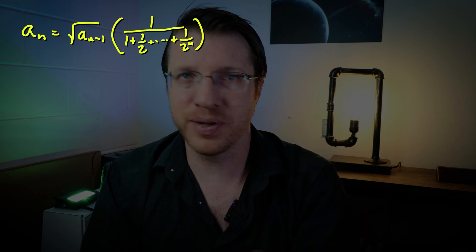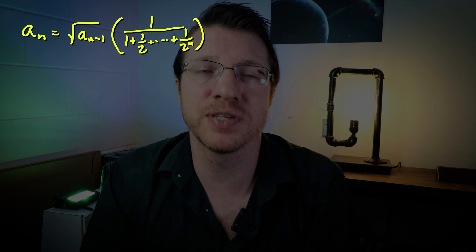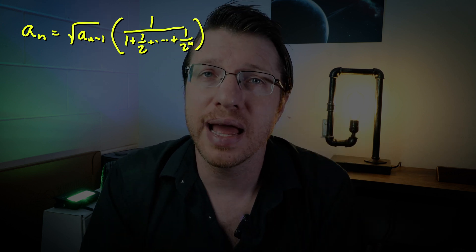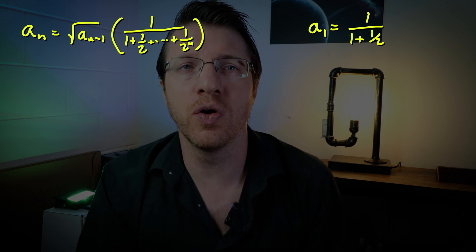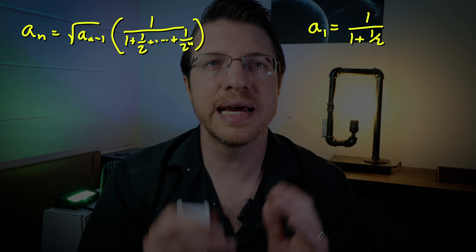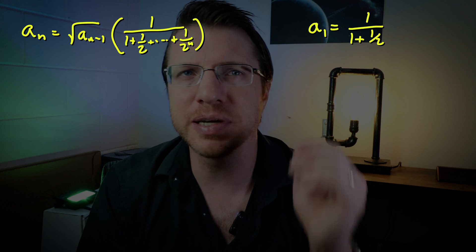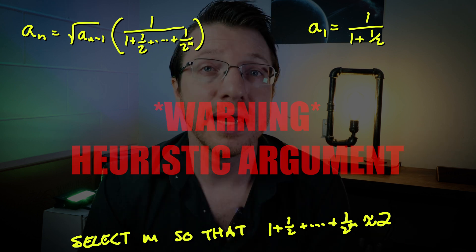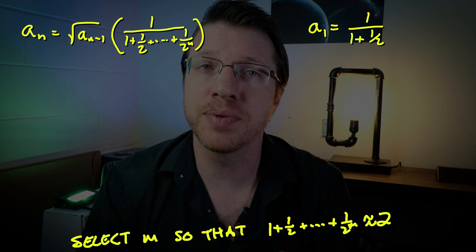We can rewrite this recursively as aₙ is equal to the square root of aₙ₋₁ times 1 over (1 + 1/2 + etc up to 1/2 to the nth power). And we will pick a₁ is equal to 1 over 1 plus 1/2. Let's fix some m really large so that the partial sum is practically at the limit of 2.